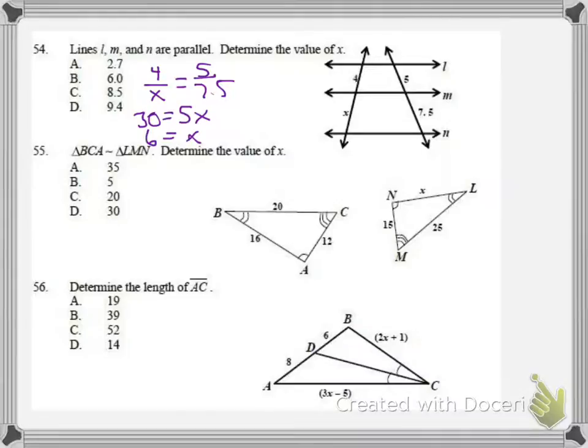For number 55, we need to find the value of X. We're going to be very careful to match up corresponding parts. So X is between the 1 and 2 angles right here. Over in the other triangle, between the 1 and 2 angles is 16. Then I need another reference. How about between the 2 and 3? So 25 and 20, which is between the 2 and 3 in the other one.